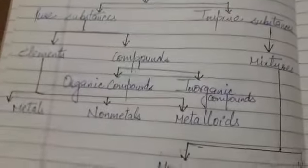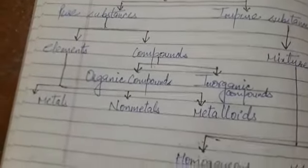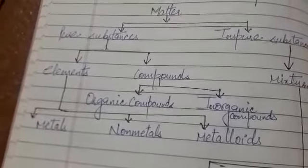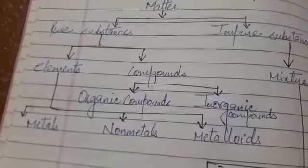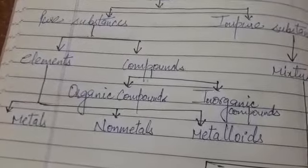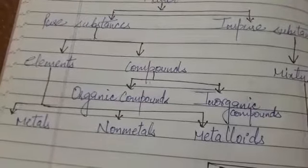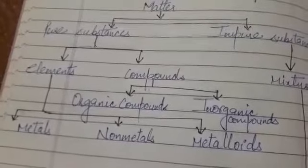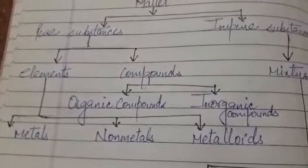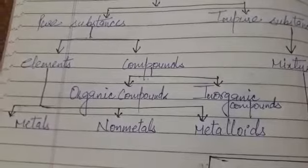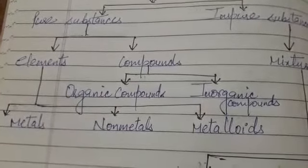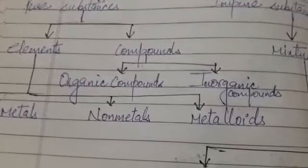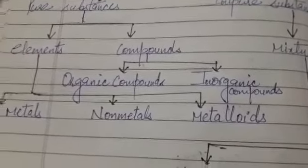Now let us study our next topic, that is compounds. What is a compound? Compounds are pure chemical substances which are formed by the combination of two or more elements in a fixed proportion by mass. The compounds are formed by chemical change and are made up of molecules — their representing units are molecules, which are combinations of two or more different atoms in a fixed ratio.